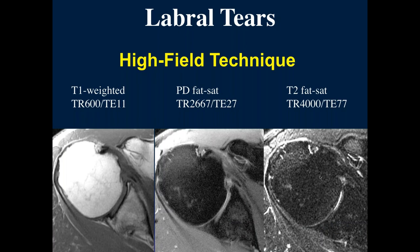In the axial plane, many people like T2 fat-suppressed sequences with a longer TE, but the problem is you lose a lot of signal-to-noise and the spatial resolution is substantially degraded. Even though contrast may be a little better for fluid, smaller lesions can be missed. So we prefer the PD fat-suppressed images and standard T2 for the T2 component.